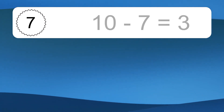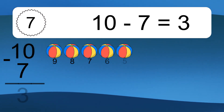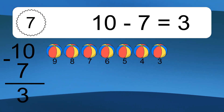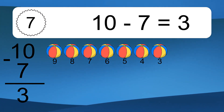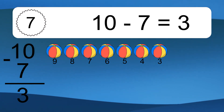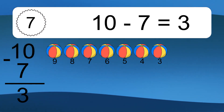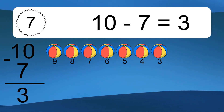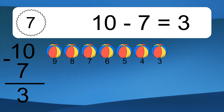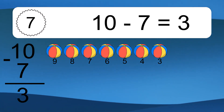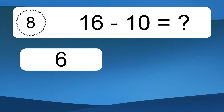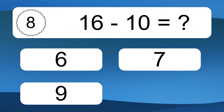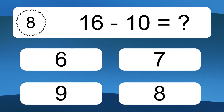10 minus 7 equals what? 10 minus 7 equals 3. Let's count it: 9, 8, 7, 6, 5, 4, 3.